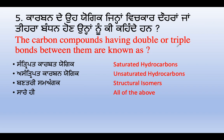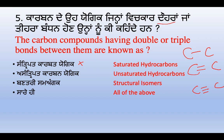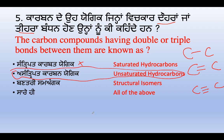Carbon compounds having double or triple bonds between them are known as unsaturated hydrocarbons. A single bond compound is called an alkane (saturated). Double bond compounds are alkenes, and triple bond compounds are alkynes. For example, ethene has a double bond. Saturated hydrocarbons are alkanes; option B is correct. Unsaturated hydrocarbons have double or triple bonds.